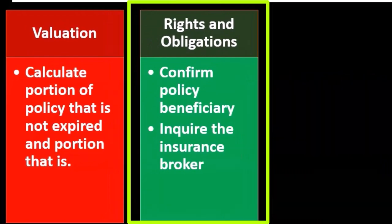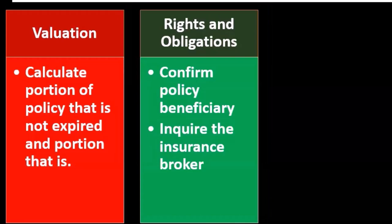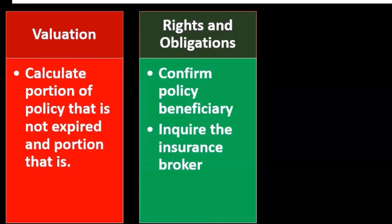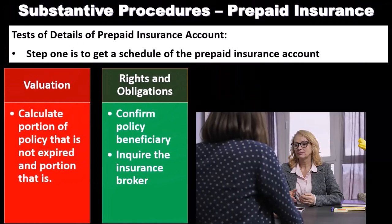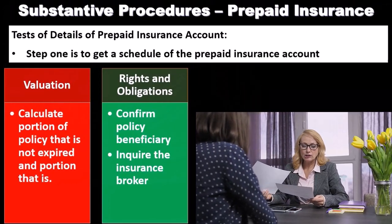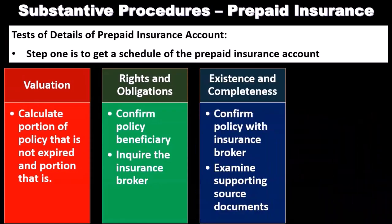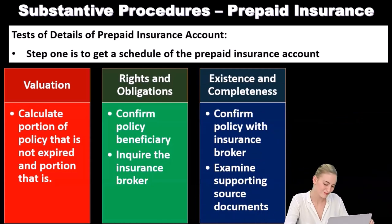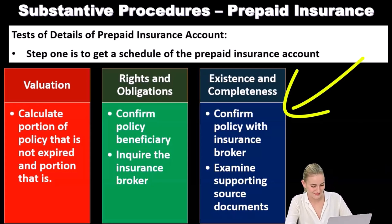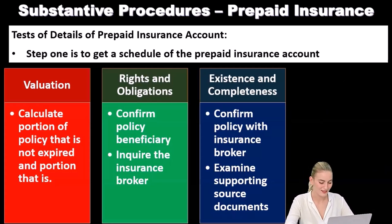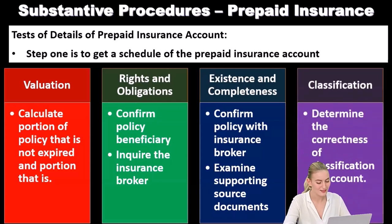For the rights and obligations assertion, we confirm the policy beneficiary to make sure we know who the beneficiary is. We would also inquire with the insurance broker, who is outside the organization, which gives us better and more reliable evidence. For existence and completeness, we confirm the policy with the insurance broker and examine supporting source documents.